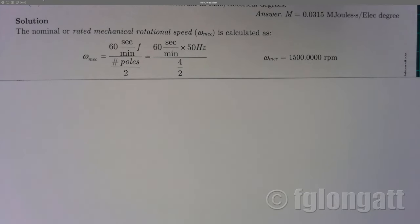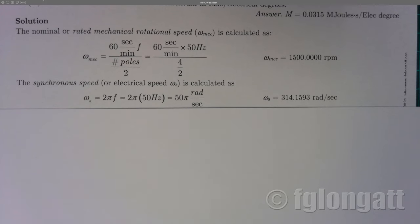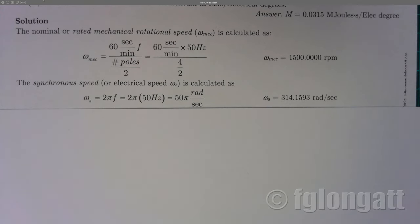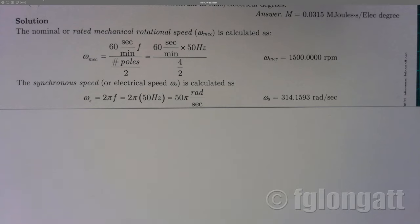I highly suggest repeating this example at 60 Hz as well. Next, we calculate the synchronous speed. We use the term synchronous speed when talking about the electrical rotational speed. The equation is extremely simple: the synchronous speed ωs = 2π multiplied by the frequency. Since we are working with a 50 Hz generator, the electrical rotational speed is 50π radians per second, or numerically 314.1593 radians per second.